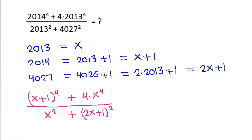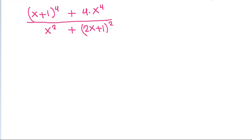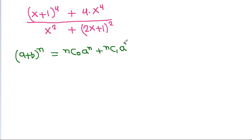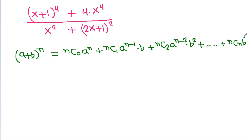Now, using the binomial theorem, (a plus b) to the power n equals nC0 times a to the power n, plus nC1 times a to the power (n minus 1) times b, plus nC2 times a to the power (n minus 2) times b squared, and so on up to nCn times b to the power n.